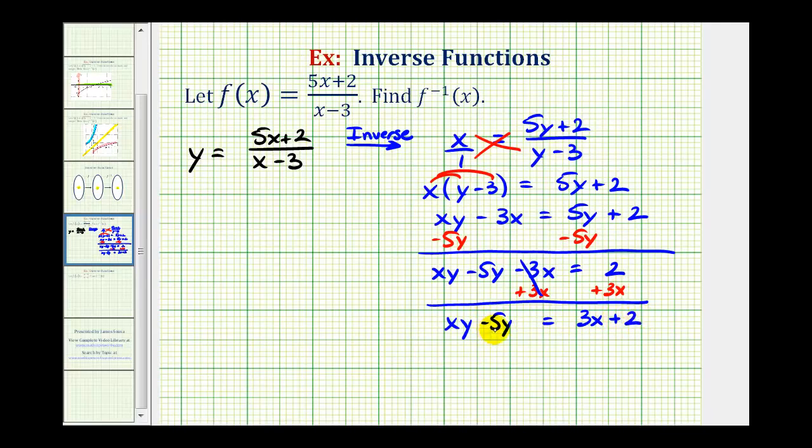Now to solve this for y, we're actually going to have to factor out the common factor of y. So we'll have y times the quantity x minus five equals three x plus two.